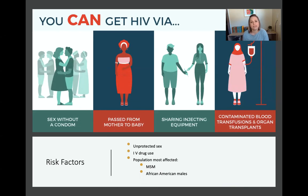The most common routes HIV is passed on is through sex without a condom or IV drug use and sharing of needles. It can also be passed from mother to baby during pregnancy or from contaminated blood transfusions and organ transplants, but that's really rare these days because those are so well tested. The population most affected by HIV is males who have sex with males and African-American males specifically.